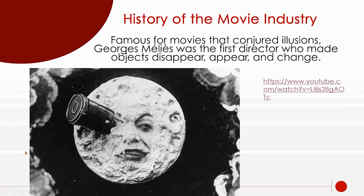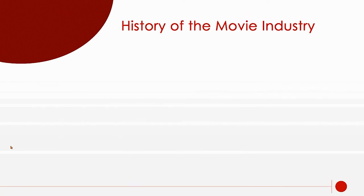Early films were shot like a play — no close-ups or anything like that. These were silent movies; they would usually have an orchestra or someone playing piano in the theater while it was showing, because there was no audio on the film. It was a good job for a piano player to play in the local movie house while films were playing.